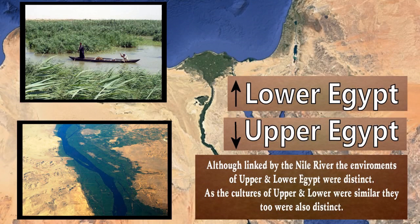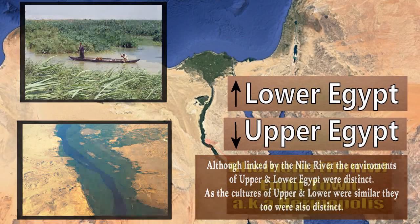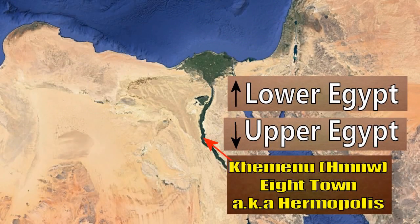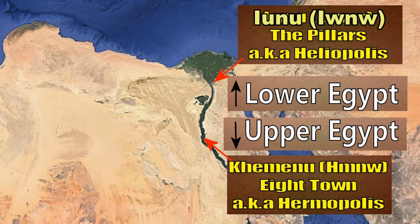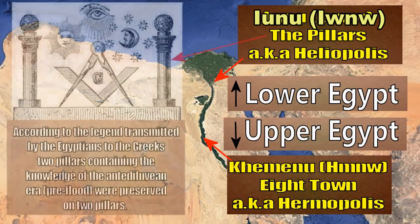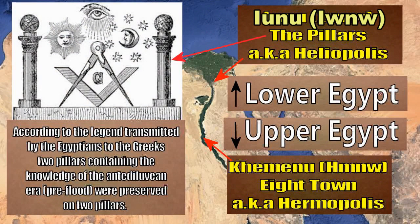Upper and lower Egypt, although linked by the Nile River, have rather distinct environments and cultures. In upper Egypt, or southern Egypt — upper as in up the Nile — we have Khemenu, meaning Eight Town, later called Hermopolis. In lower Egypt or northern Egypt we have Iunu, the pillars, also known as Heliopolis. This will be an important feature to come to in future episodes regarding the Benben, the flooding cycles, and the navel of the world.